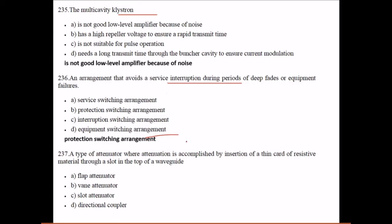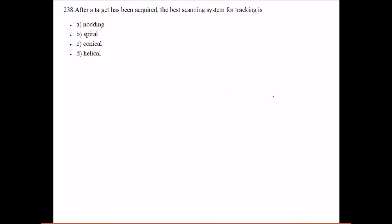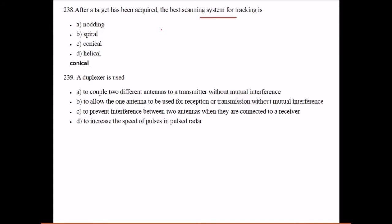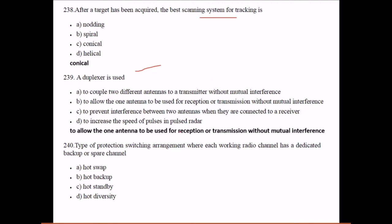An arrangement that avoids a service interruption during periods of deep fades or equipment failures is a protection switching arrangement. A type of attenuator where attenuation is accomplished by insertion of a thin card of resistive material through a slot in the top of a waveguide is flap attenuator. After a target has been acquired, the best scanning system for tracking is conical.